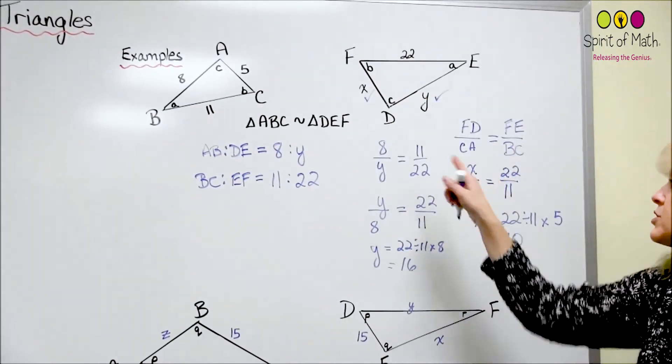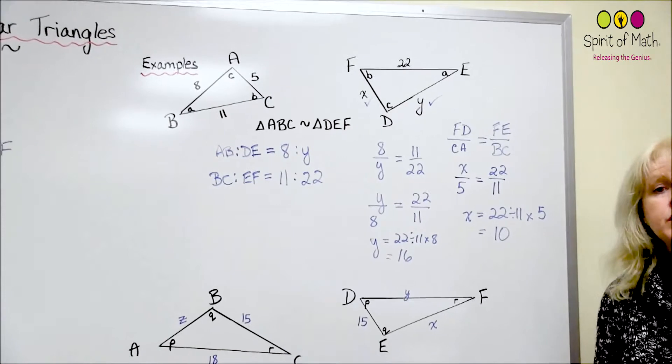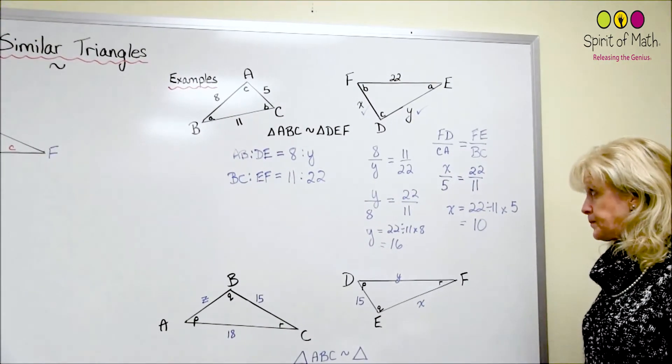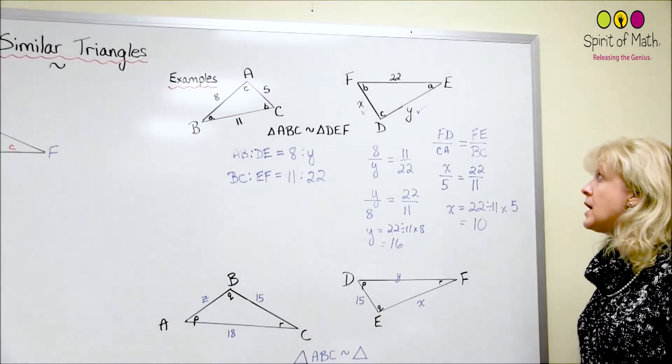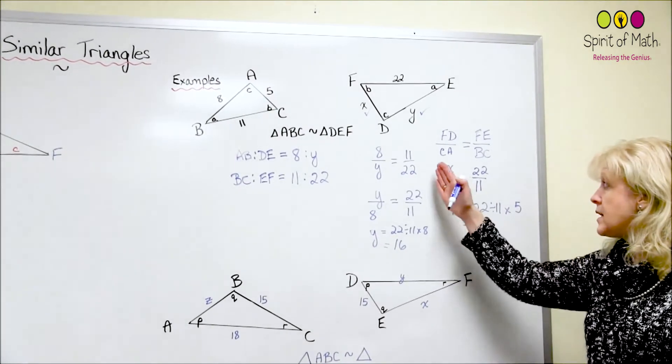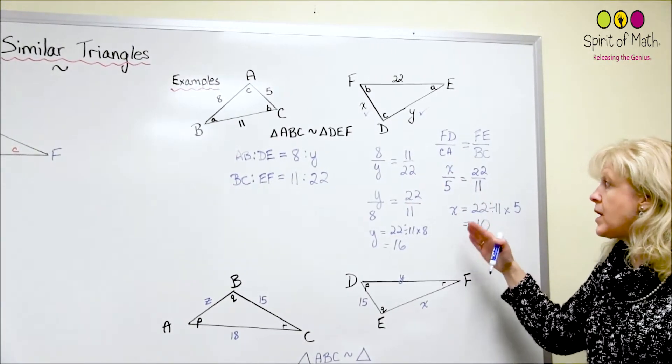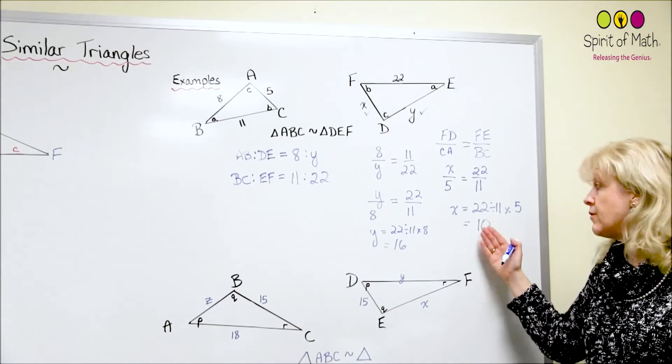Knowing that they're similar triangles, you can calculate then what those sides are. All right, so corresponding sides gives you an idea as to what ratios to set up, and then you just do your algebra to finish off.